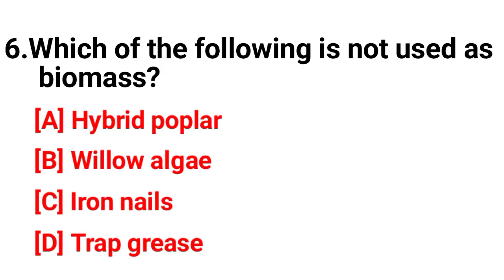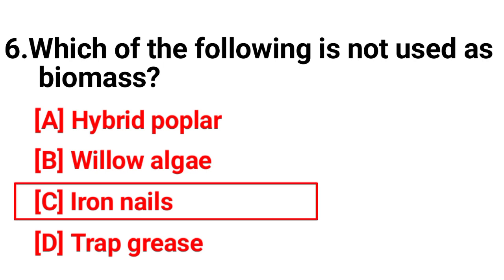Question number six: which of the following is not used in biomass? The correct answer is option C, iron nails.